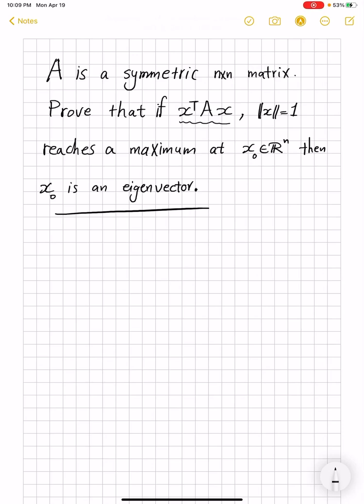Hello, today I have another problem where linear algebra and analysis come together in a surprising and beautiful way. I have a symmetric matrix and I'm interested in maximizing x transpose times Ax, where x is from the unit sphere. And I want to prove that when this maximum is attained, that happens at an eigenvector.